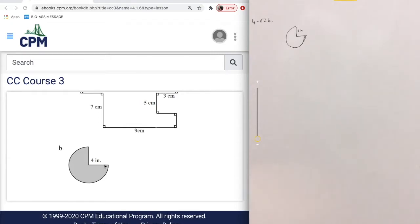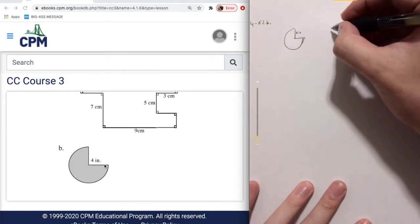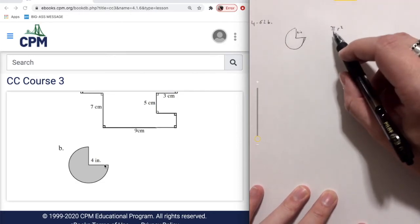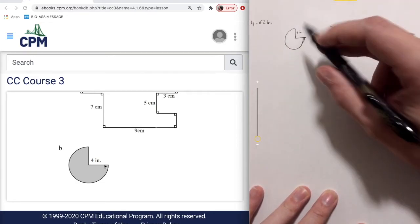To find the area of this shape, we need to remember what the equation for the area of a circle is. That is going to be pi r squared - this number pi multiplied by the radius squared.